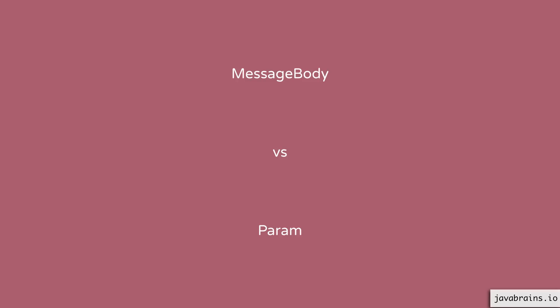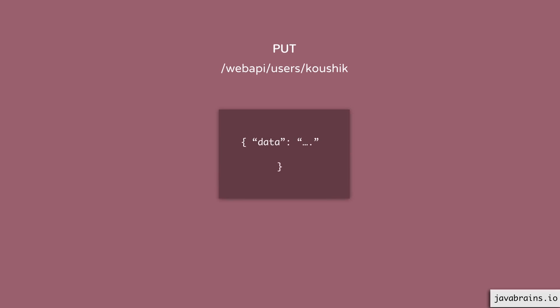Let's look at a PUT request to the URL /webAPI/users/Kaushik. This PUT request is going to take some data in the request body — we are updating the user with the name Kaushik. The parameter here is 'Kaushik,' which is a path param, so you'd pick it up using the @PathParam annotation. This is a param, so you'd need param converters to deal with it. However, the message body is the content of the request, so it would need message body readers and message body writers. Since you're doing a PUT request and reading a payload into a Java type, this would use a message body reader.